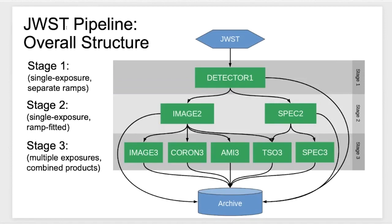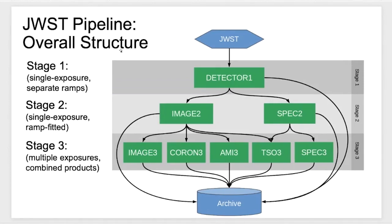This slide shows the overall structure of the pipeline. There are basically three stages. Stage one is what we call detector one — all exposures go through that. It covers single exposure calibrations, mostly processing separate ramps before combining them and before doing the ramp fitting. Stage two is still single exposure, but everything coming into stage two has already been ramp fitted. Stage three is when all the individual exposures have been ramp fit and we combine them into combined multi-exposure products.